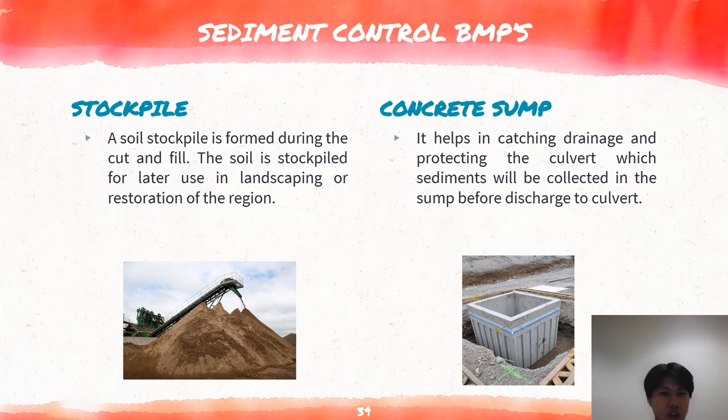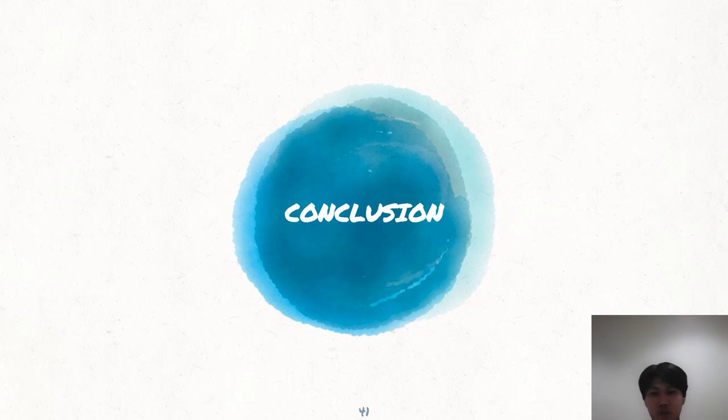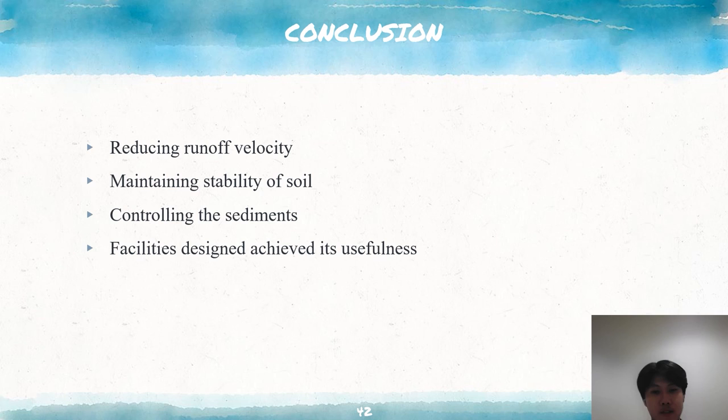For erosion control BMPs, seeding and planting are implemented to control soil erosion, because seeding of grasses and planting of trees, shrubs and ground covers provide long-term stabilization of soil. In short, the objectives of the ESCP are achieved as it helps in reducing the runoff velocity, maintaining the stability of the soil, and controlling the sediments — the facilities designed have achieved their usefulness. Thank you, doctor, for spending time to watch my presentation.